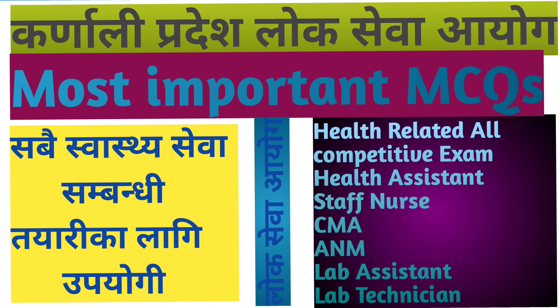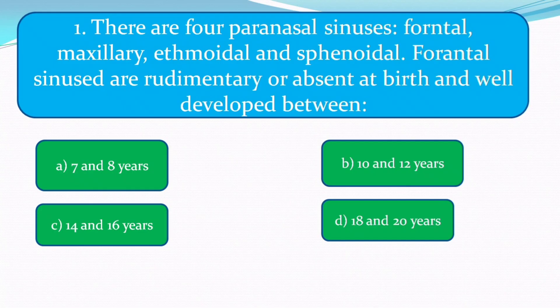Without any further delay, let's begin the video. Question number one: there are four paranasal sinuses — frontal, maxillary, ethmoidal, and sphenoidal. Frontal sinuses are rudimentary or absent at birth and well developed between the age of seven and eight years. The correct answer is seven and eight years.